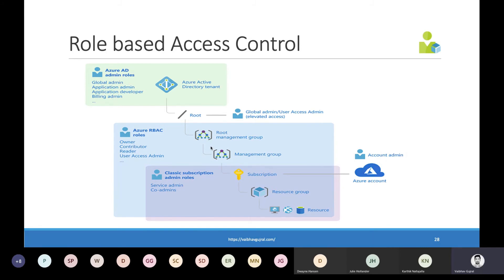Before Azure Resource Manager was introduced, there was a different deployment model known as the Azure Service Management model, now called the classic model. Under the classic model, there were roles like service administrators and co-administrators, which still reflect in the Azure portal — you can still see co-administrators or service administrators listed at your subscription level, along with RBAC roles. There are also account admins responsible for paying the bill for your subscription.